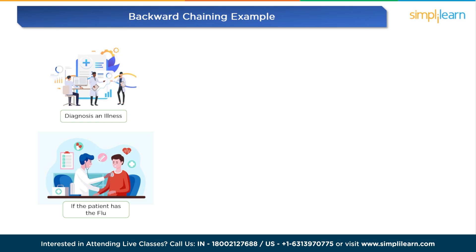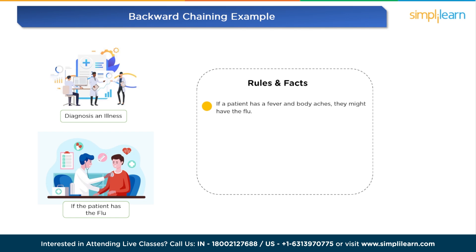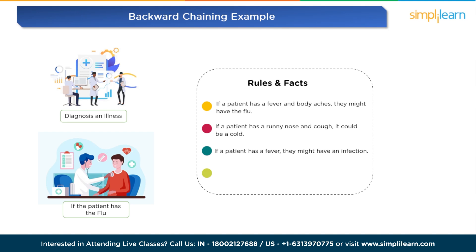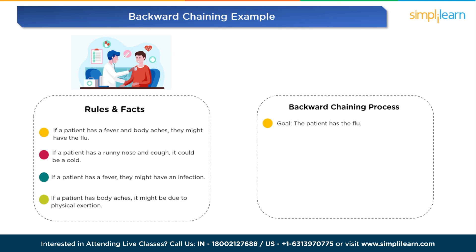Here is a simple real-world example of backward chaining. Scenario: diagnosing an illness. The goal is to determine if a patient has the flu. Rules and facts: Rule 1 — if a patient has a fever and body aches, they might have the flu. Rule 2 — if a patient has a runny nose and cough, it could be a cold. Rule 3 — if a patient has a fever, they might have an infection. Rule 4 — if a patient has body aches, it might be due to physical exertion. In this example, we start with the goal of determining if a patient has the flu.